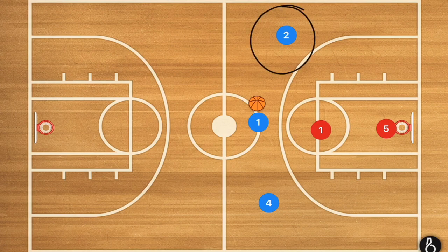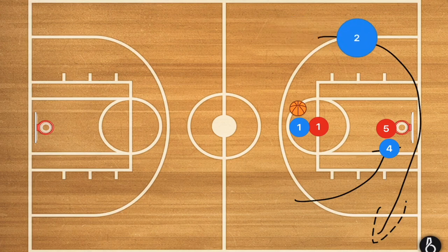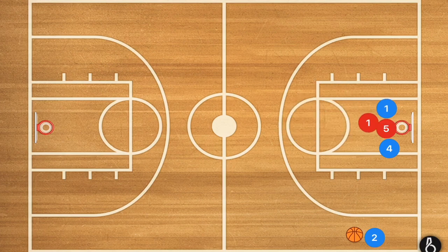If player two is a fantastic shooter, you can have player four set a screen down, player one attacking the high post, and player two using that screen — then player one kicks the ball out to player two for the three-point shot. At this point you've got two players on two to box out and get the rebound if player two misses.